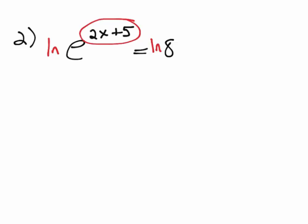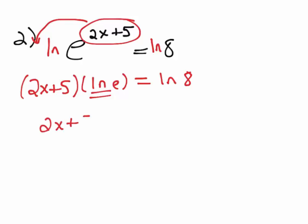If I do that, and don't forget, it's okay to rewrite this when you have an e to a power like that, or anything to a power, you could write it in front. So this is really the same as 2x plus 5 times the ln of e equals ln of 8. Now you have to remember that the ln of e is just 1. So really what you have is 2x plus 5 equals the ln of 8.